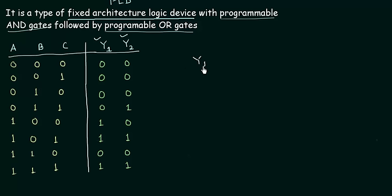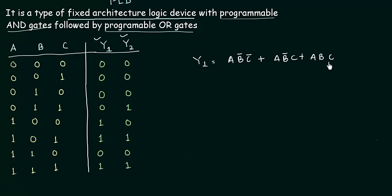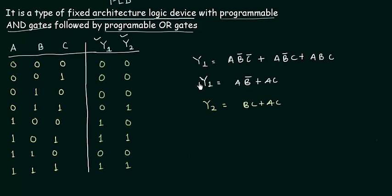Function Y1 is high when A=1, B=0, C=0, giving us AB̄C̄; also high when A=1, B=0, C=1, giving AB̄C; and also high when A, B, C are all 1. Once you reduce this using Boolean algebra or a K-map, we get AB̄ or AC. Similarly, the minimal SOP form for Y2 is BC or AC. So we are done with step 2.